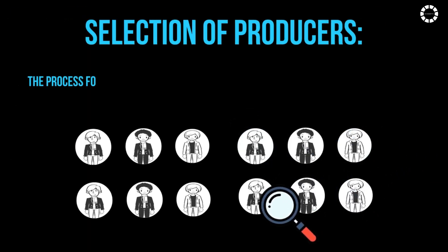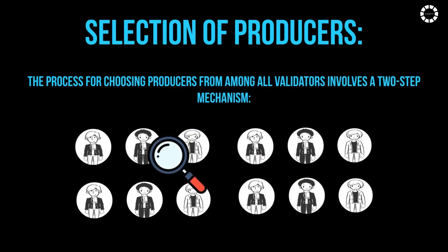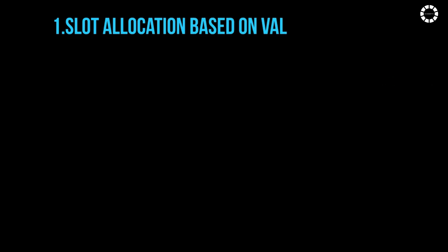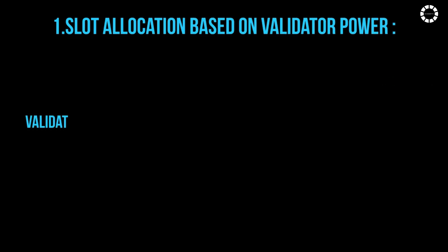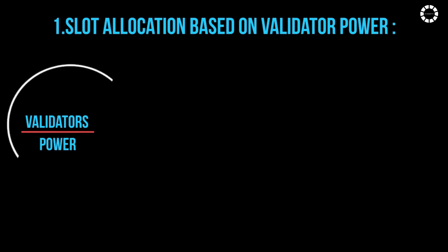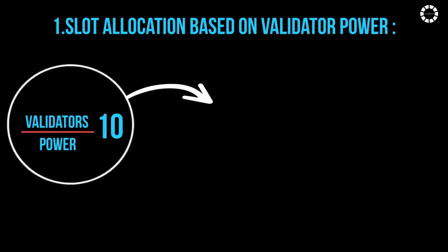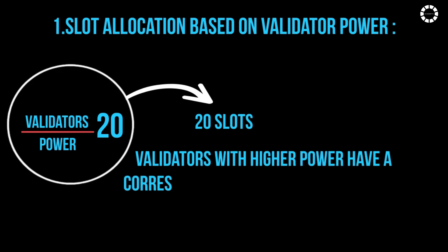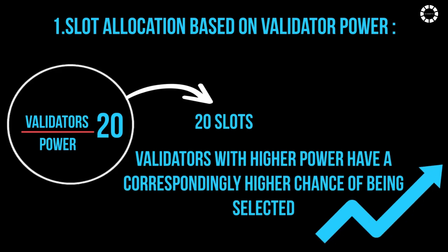Selection of Producers: The process for choosing producers from among all validators involves a two-step mechanism. Step 1 — Slot Allocation Based on Validator Power: Each validator is assigned a number of slots proportional to their power. A validator with a power rating of 10 will receive 10 slots, while one with a power rating of 20 will receive 20 slots. This ensures validators with higher power have a correspondingly higher chance of being selected.